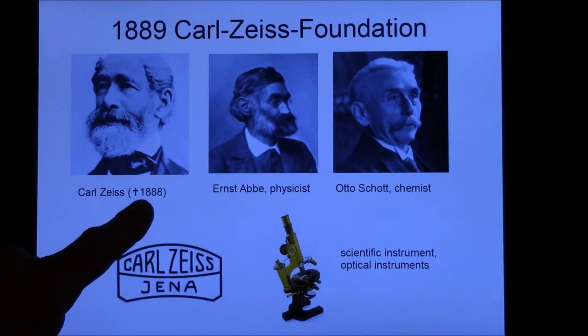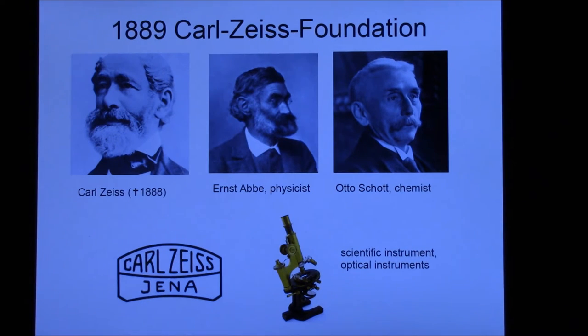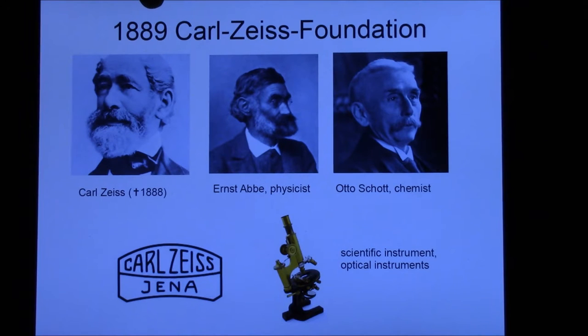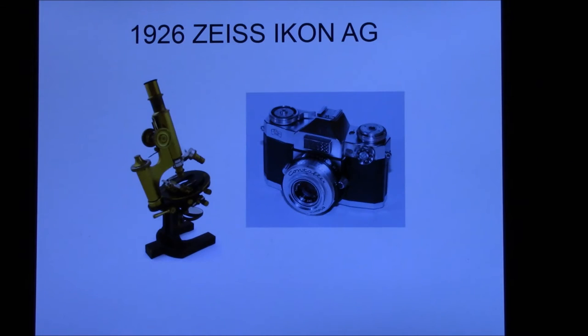After the death of Carl Zeiss, Ernst Abbe created a foundation and named it according to Carl Zeiss. 1889 was the start of the Carl Zeiss Foundation. At that time they were known as makers of one of the finest optical instruments.